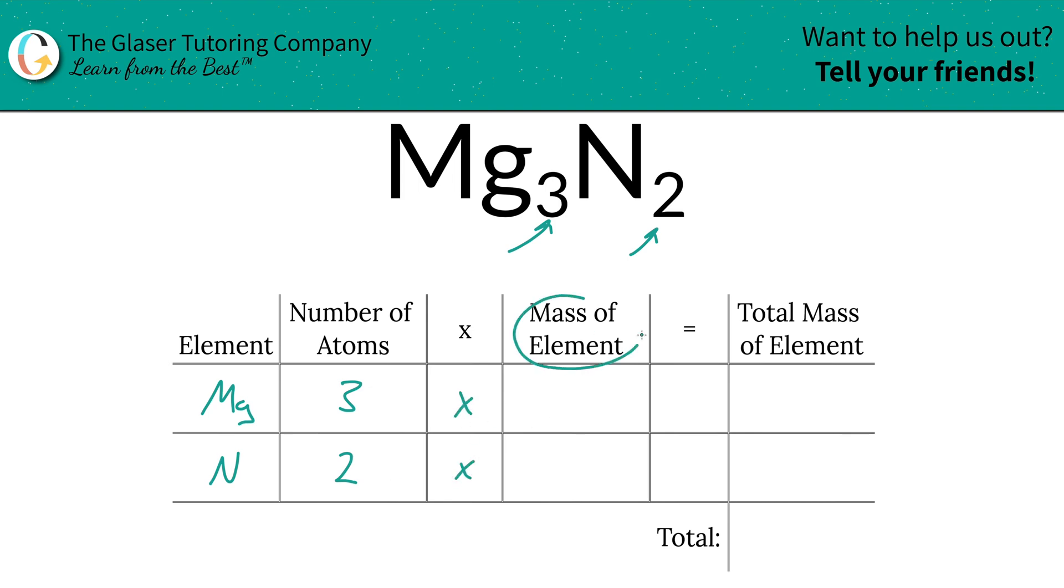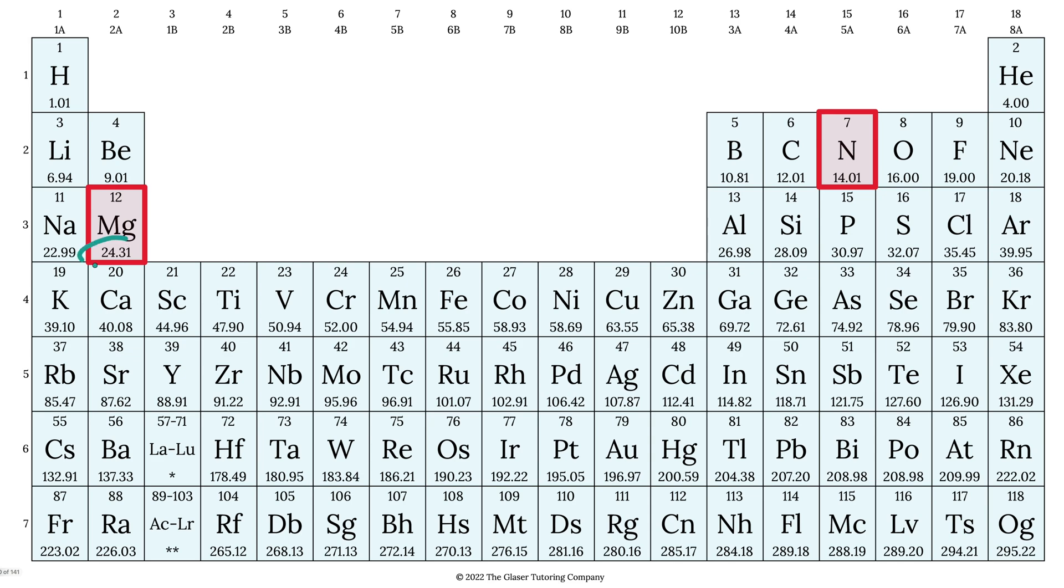Then we're simply going to multiply those number of atoms by the mass of each element. Those masses are found on the periodic table. So here's magnesium, 24.31. Nitrogen is 14.01.